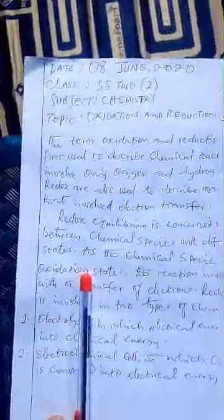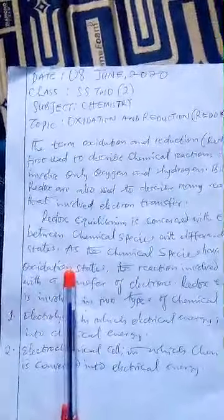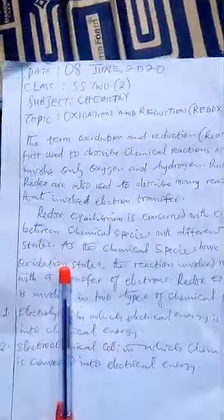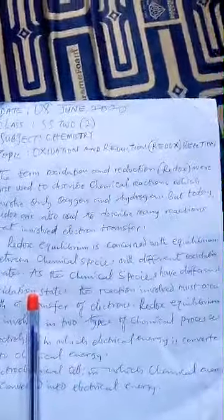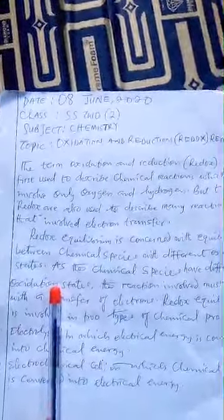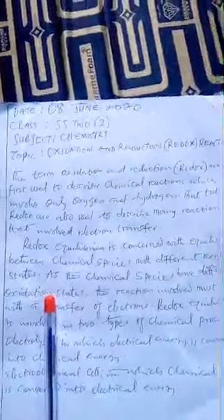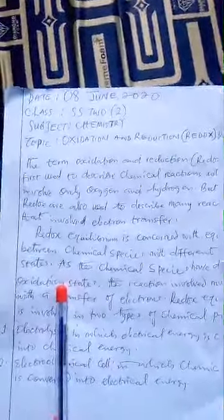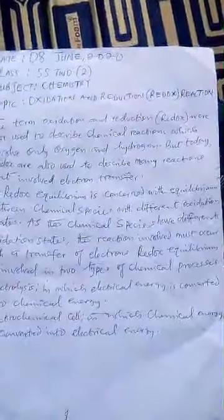Don't get tired — God will see you through. Today we'll be looking at oxidation and reduction: redox reactions. The term oxidation and reduction, redox, were first used to describe chemical reactions which involve only oxygen and hydrogen. But today, redox is also used to describe many reactions that involve electron transfer. Redox equilibrium is concerned with equilibrium between chemical species with different oxidation states.